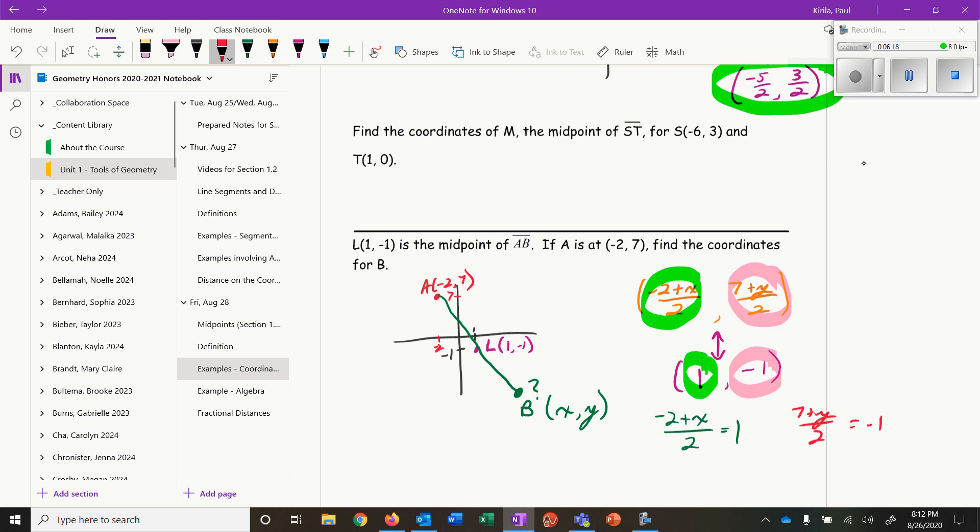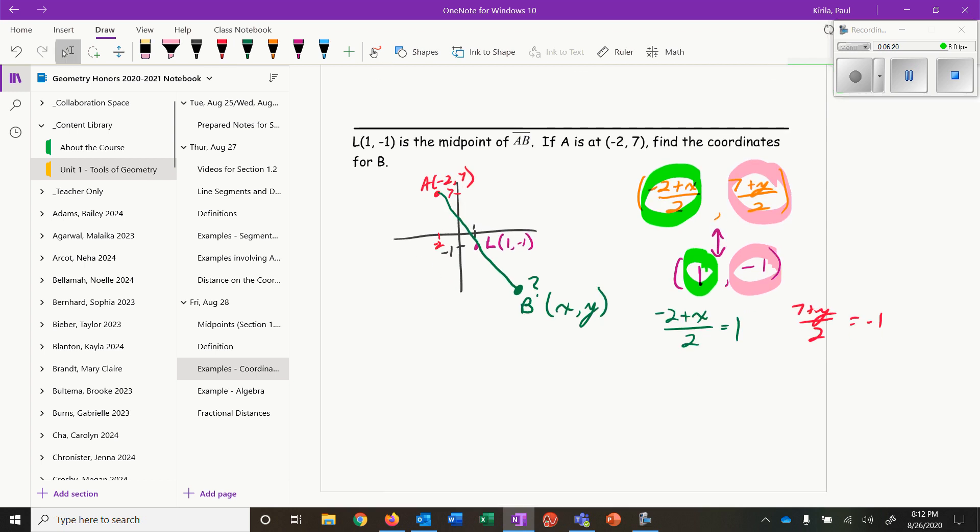I'm going to solve my x's first. To get rid of the divided by 2, I'm going to multiply by 2, and anything I do on one side I have to do on the other. That'll leave me with -2 + x equals 2. To get rid of a -2, I need to add 2 to both sides, and that leaves me with x equals 4. So this is going to be the x coordinate for B.